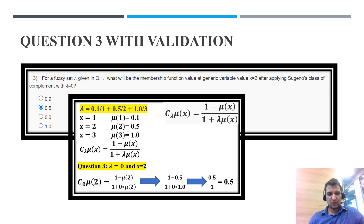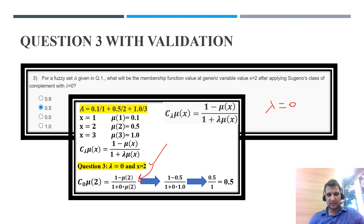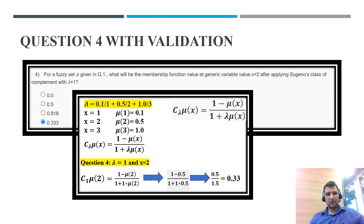Question 3: lambda equals 0 and x equals 2. In this assignment, the first three questions use lambda equal to 0, the next three use lambda equal to 1, and the last three use lambda equal to 2, with x equal to 1, 2, and 3 for each set. When lambda equals 0 and x equals 2, putting the values into the formula gives 0.5, so option B is correct.